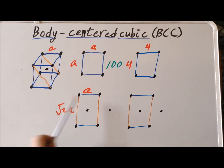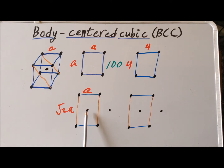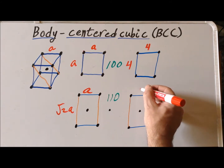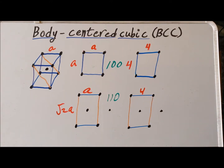So we see that the general dimensions of the 110 plane for the body-centered cubic bear a strong resemblance to the 110 plane for simple cubic in its dimensions, except that the simple cubic 110 plane does not have this atom in the center. That is an immediate point of how we can distinguish body-centered cubic 110 from simple cubic 110. We recall that the square root of 2 has a value of 1.414, which is approximately equal to 1.5.